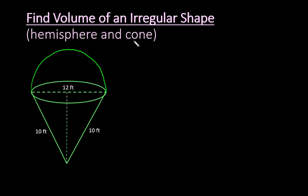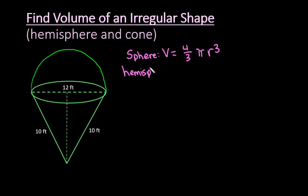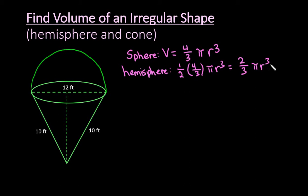For this video, I want to show you how to find the volume when you're dealing with an irregular shape. In this case we have a hemisphere and a cone, so there are a couple of formulas to talk about. The volume of a sphere is four-thirds pi r cubed, so a hemisphere would be half of that, which simplifies to two-thirds pi r cubed. We'll use this formula for the top part.